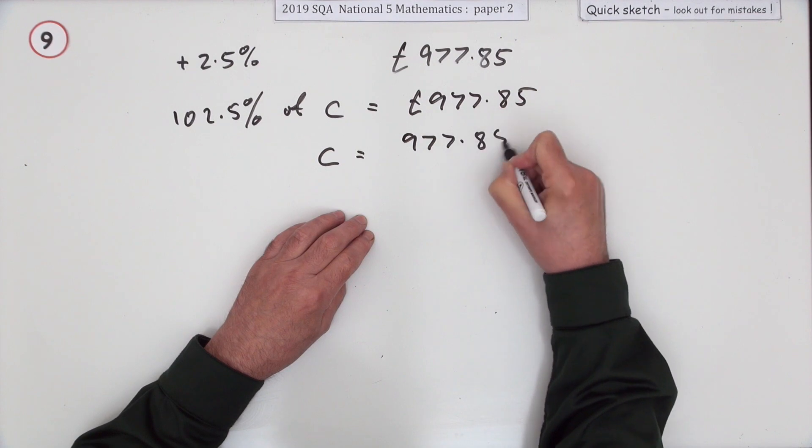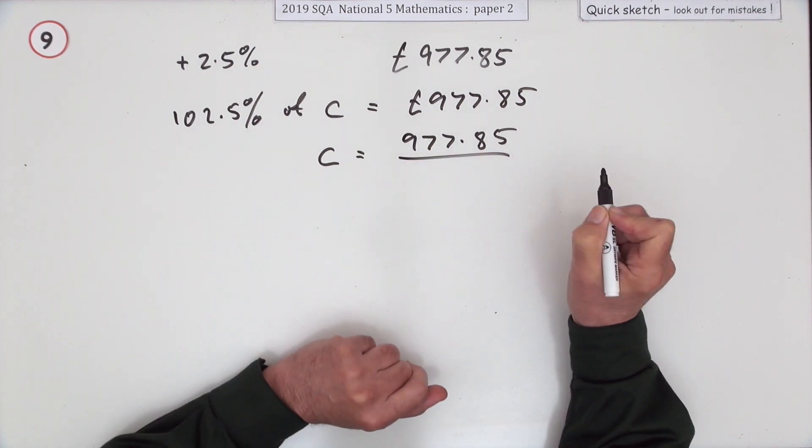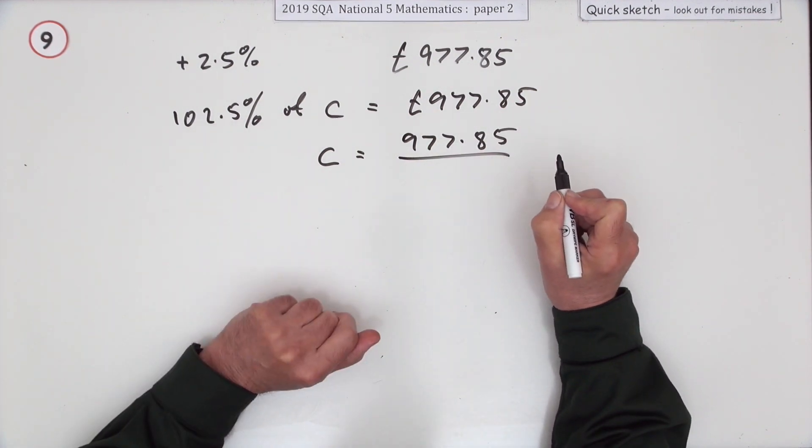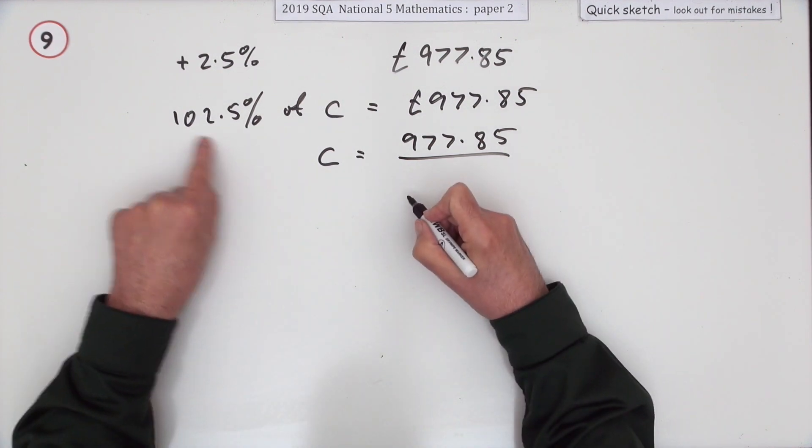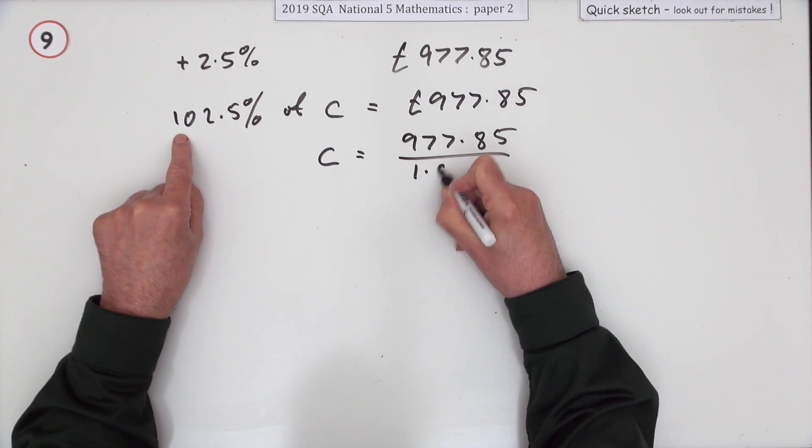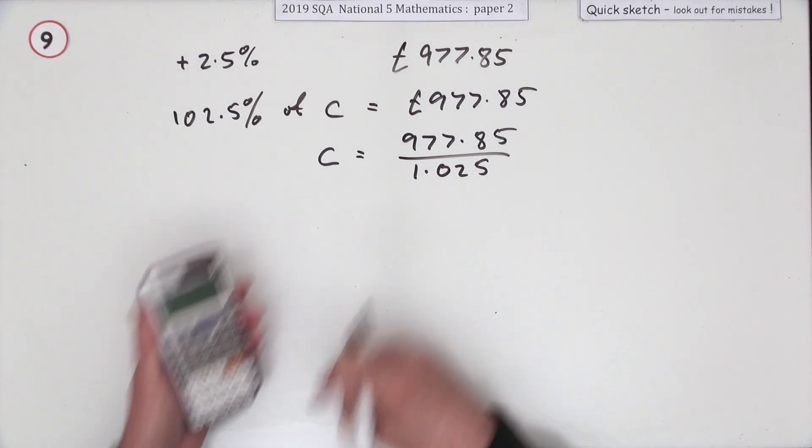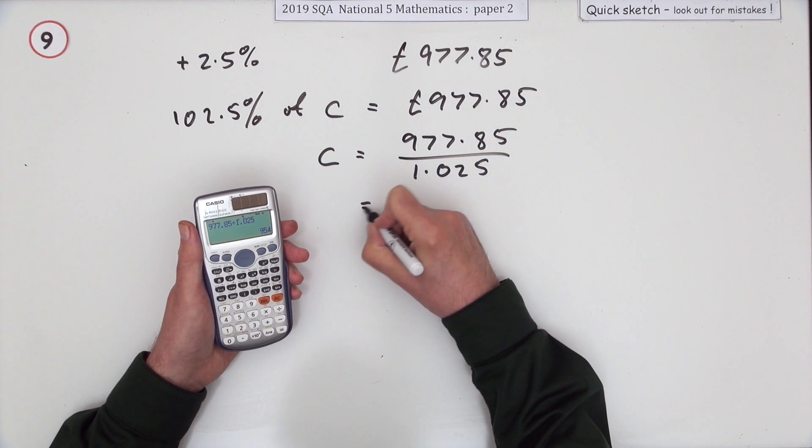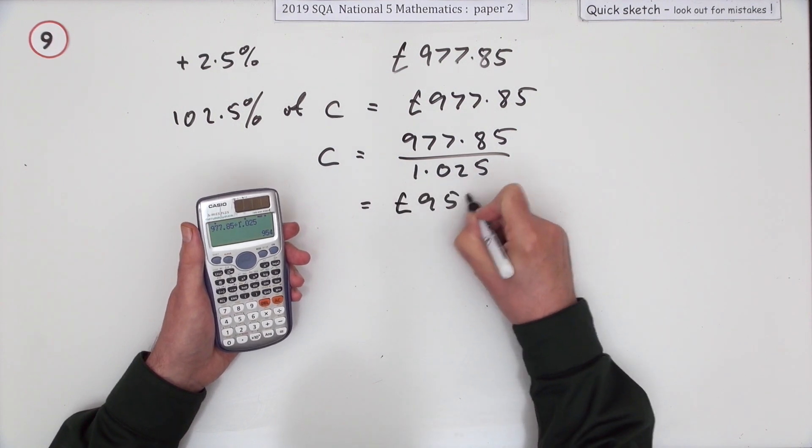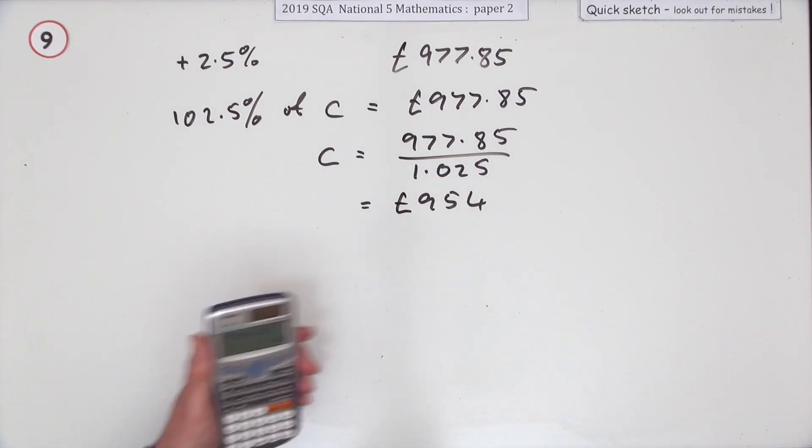I'll not divide it with its awkward form. I'll change that into 1.025 so it can go into the calculator. And when you divide it in, it turns out to be £954. The original cost was that.